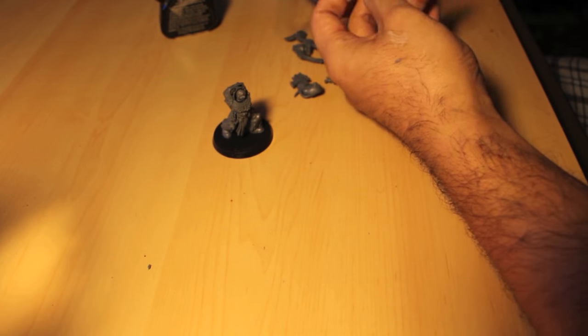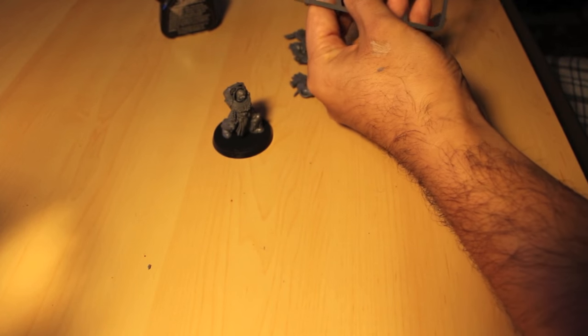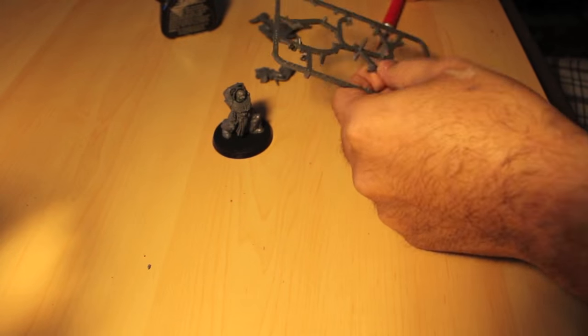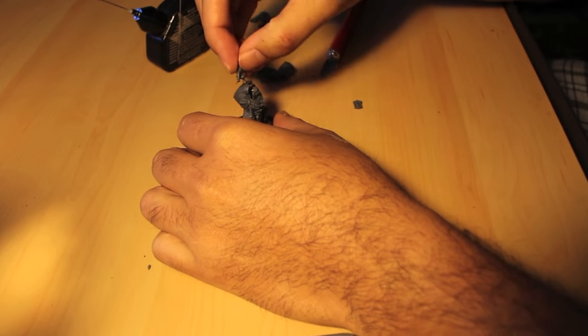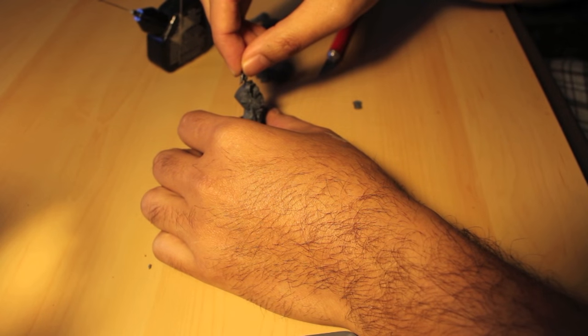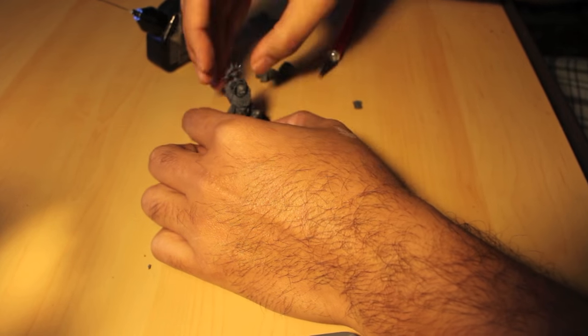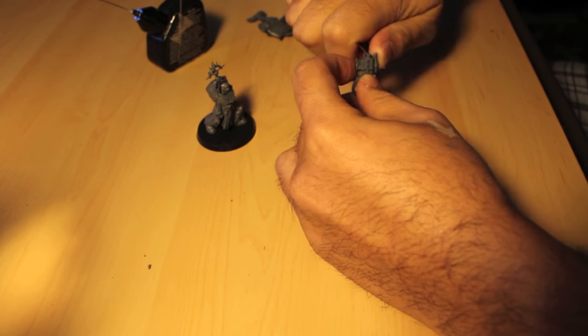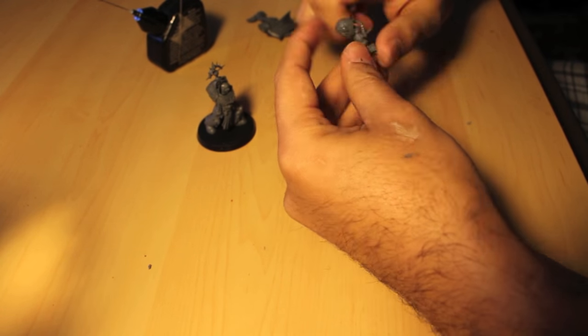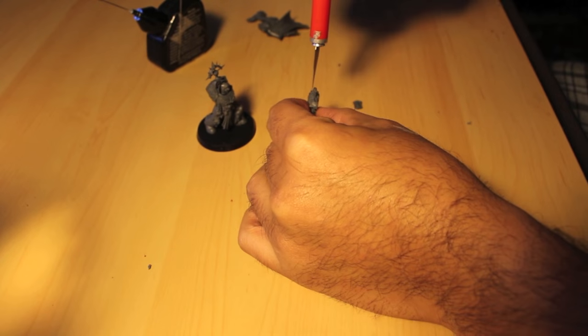And now I'm clipping out the rest of the armor pieces. And so, yeah, you really want to clean all the flash and the mold lines. Sometimes I do it before I assemble the armor. Sometimes I do it after I've glued all the pieces together. And I'm just looking at the model to see what areas to clean up. It's really up to you. Either way, it works as long as you clean up the model at some point.